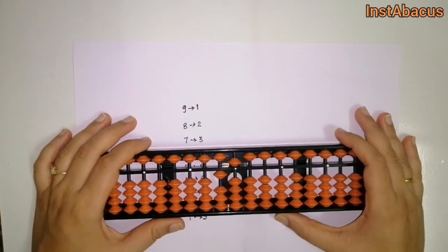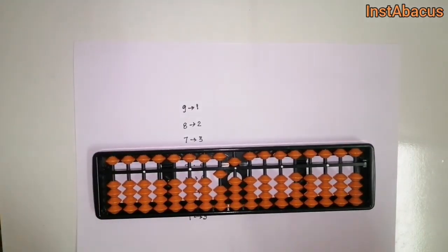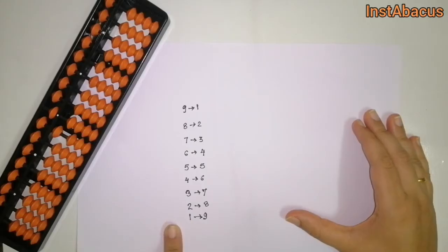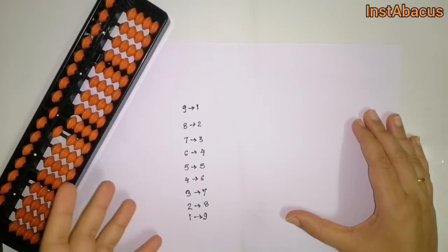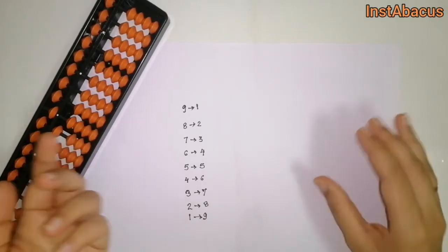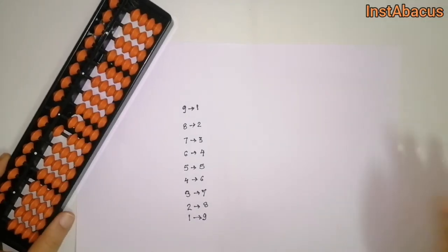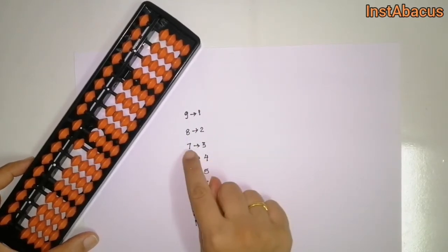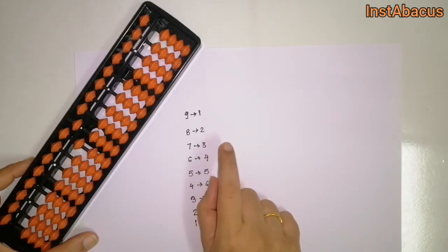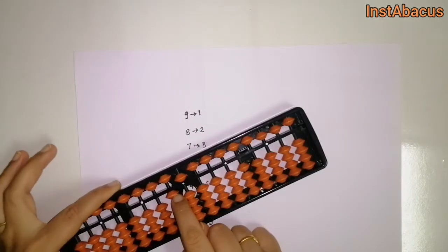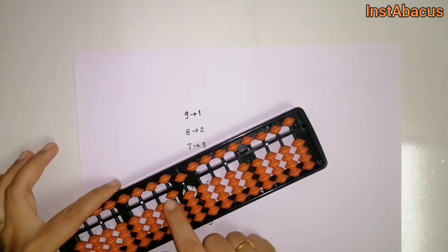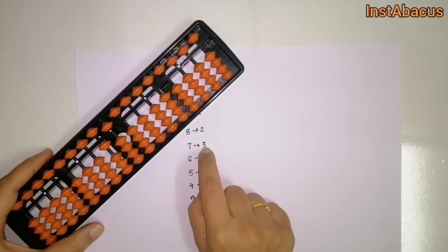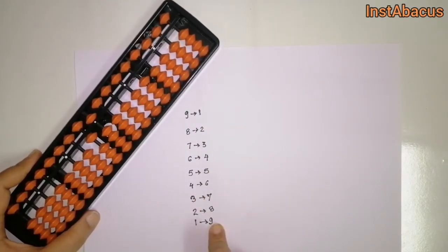We are going to focus on multiple examples using big friends in following videos — addition separately, subtraction separately. For now, just remember the big friends. You don't need to memorize them — just understand that numbers that sum up to 10 are big friends of each other. For addition, we use it in the format: 7 equals 10 minus 3. We added 1 in the tens place (meaning we added 10) and subtracted 3 — we used plus 7 in the form of plus 10 minus 3.